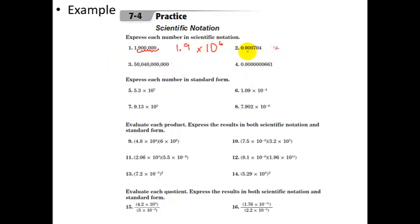Likewise, let's try this one. Move the decimal place to the right, 1, 2, 3, 4 times. So I have 7.04 times 10 to the negative 4, because I moved it to the right 4 times. Notice I don't move it all the way to the end, because then I'd have 704.